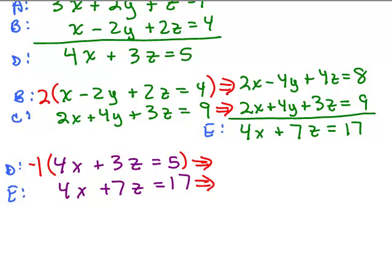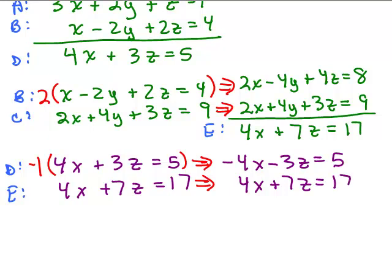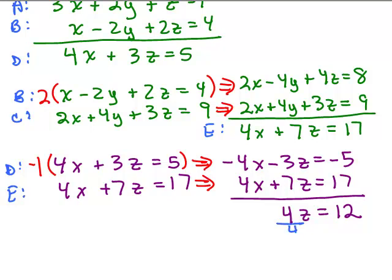Multiplying by negative 1 gives negative 4X minus 3Z equals negative 5 — don't forget to multiply both sides. The bottom equation stays as 4X plus 7Z equals 17. Adding those two equations gives 4Z equals 12. Dividing both sides by 4, Z equals 3. So I've solved for one of the variables.